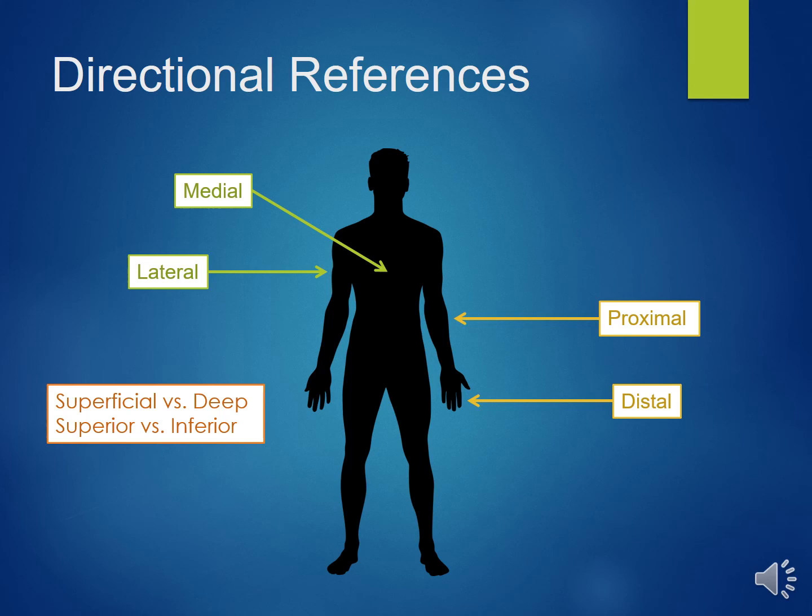Superficial means toward the body's surface — the skin is superficial to muscles. Deep means toward the interior of the body, so muscles are deep to skin. Superior means above, and it is the opposite of inferior, which means below. The neck is superior to the chest, and the ankle is inferior to the knee.